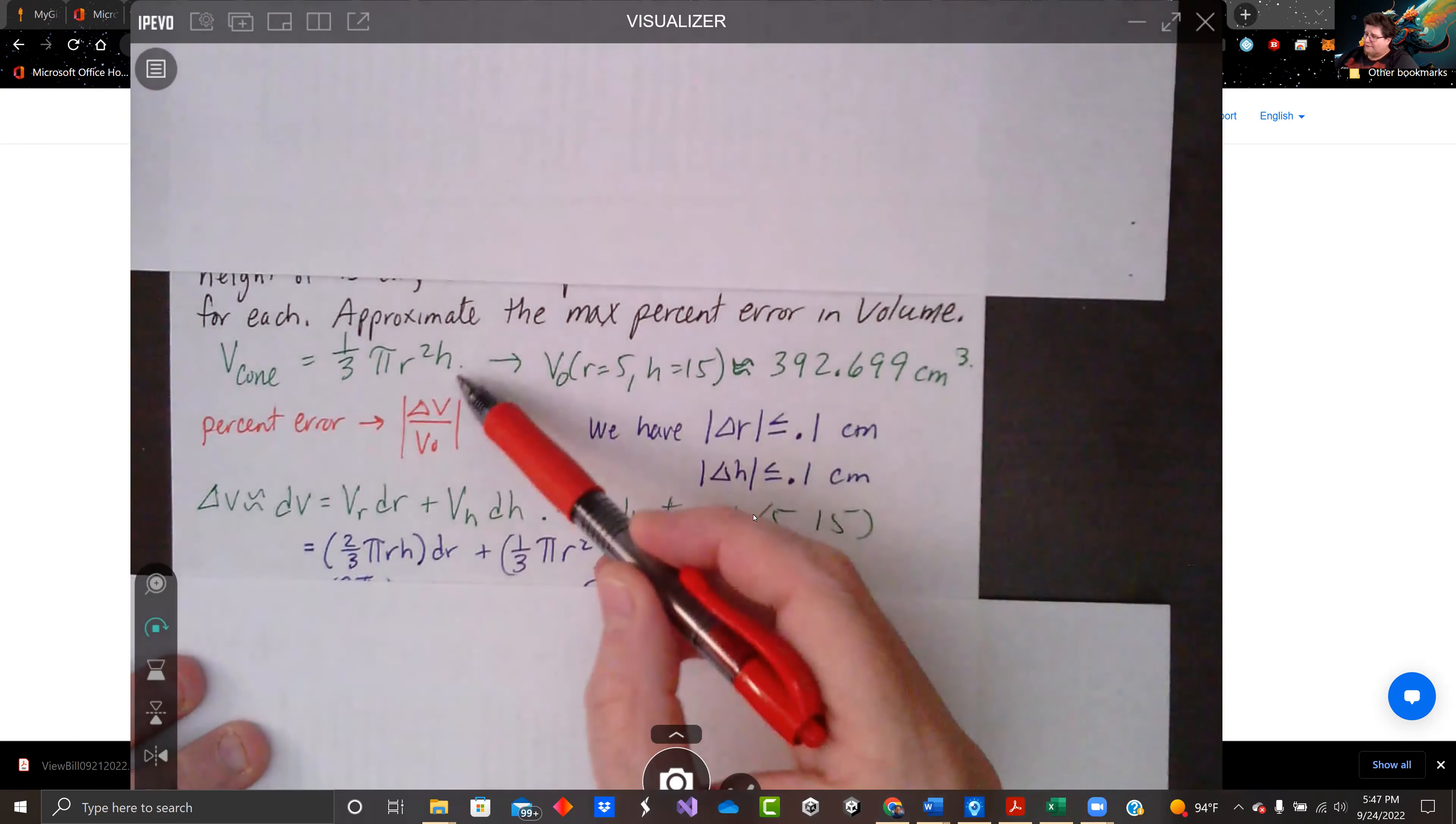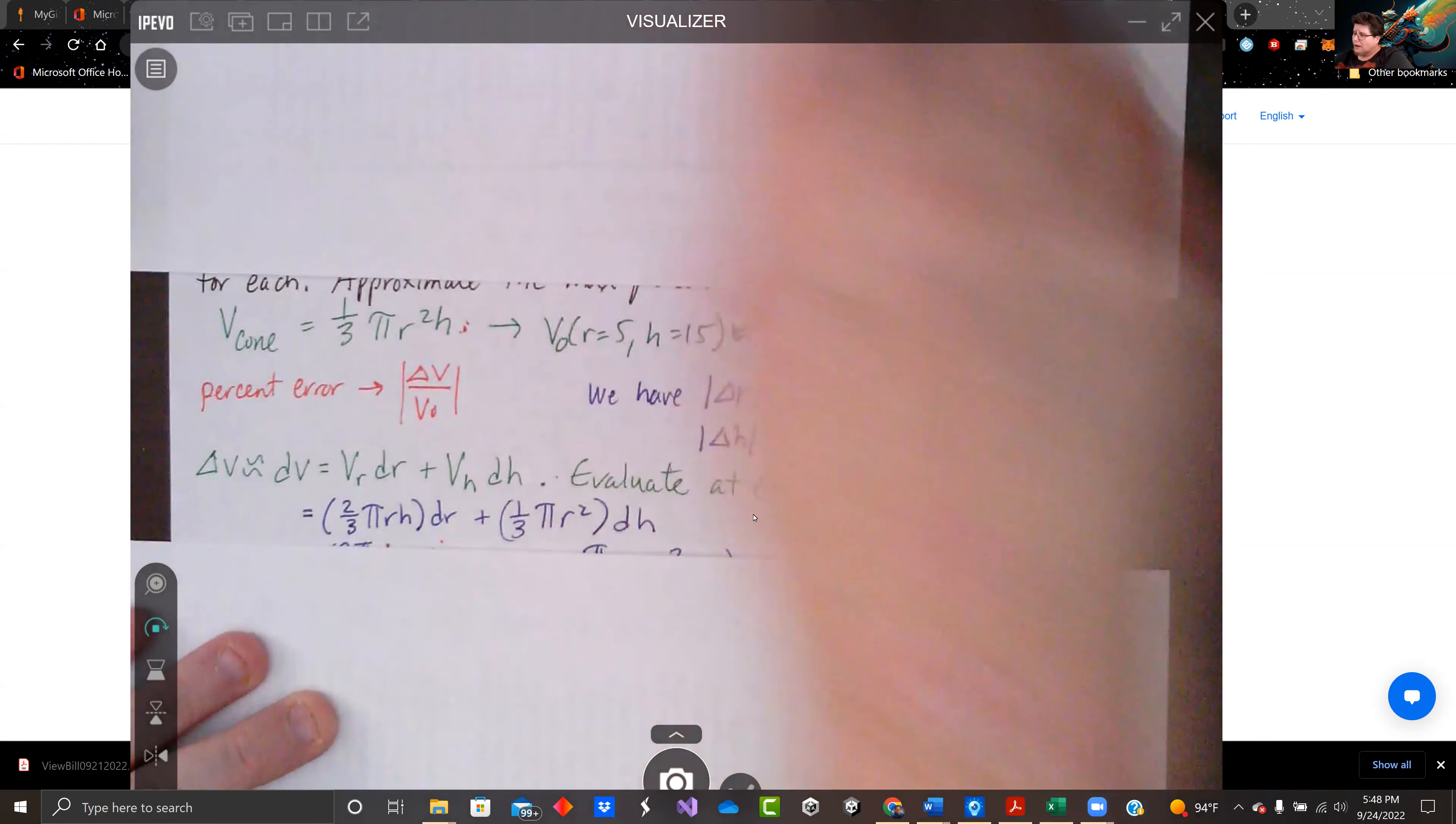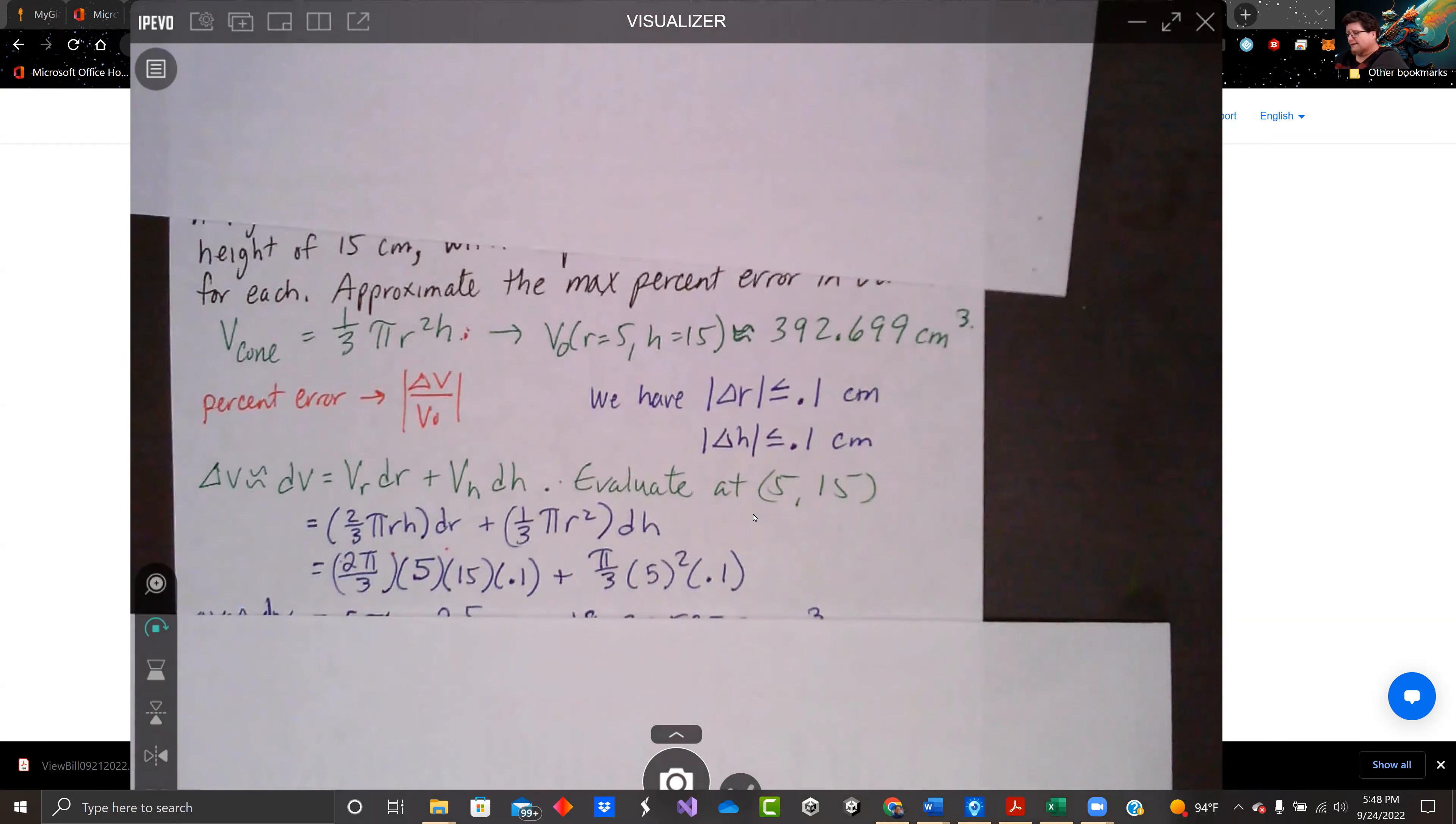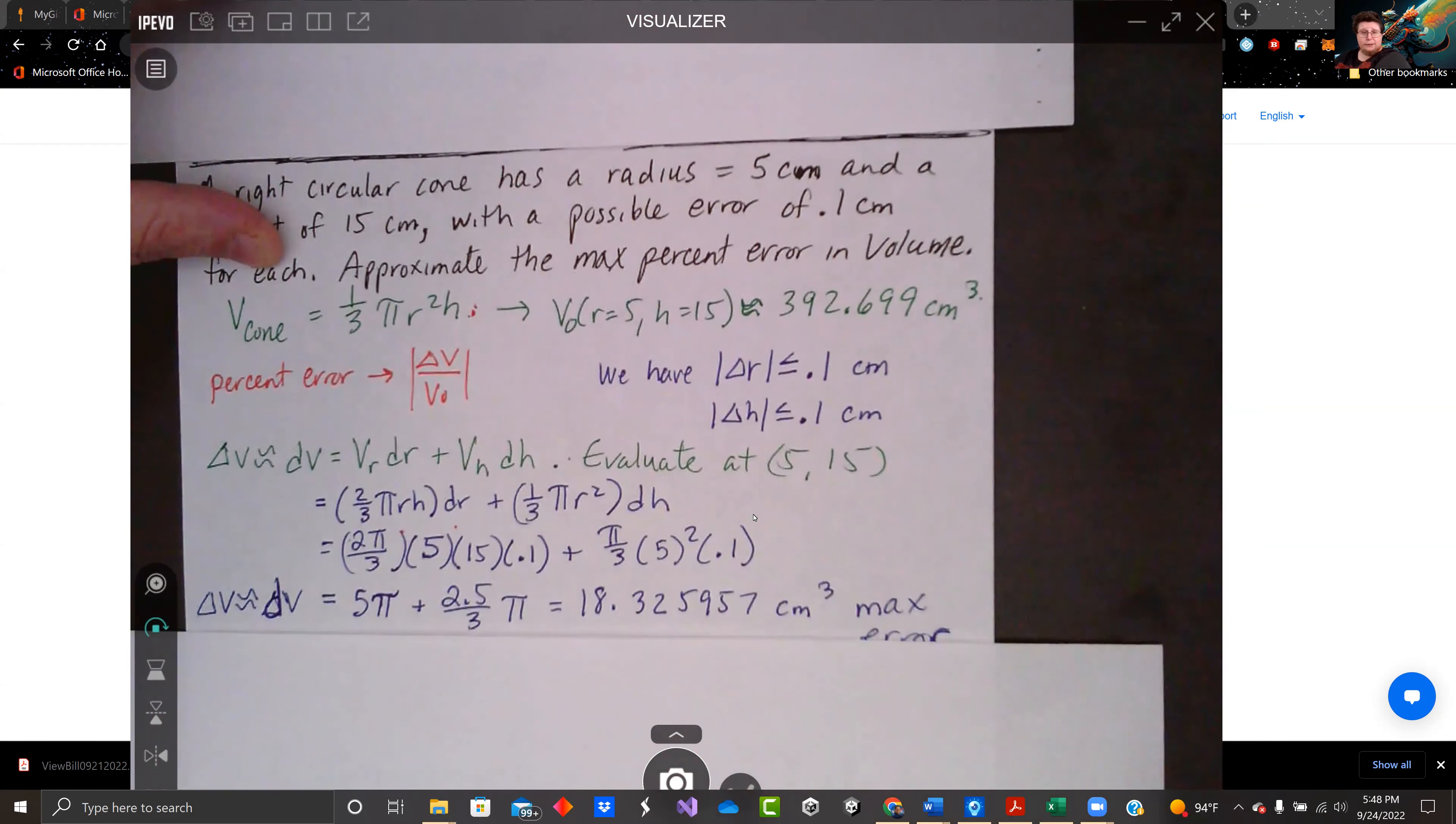So if we take the derivative of the volume function with respect to r, we have two-thirds pi r h times dr. We take the derivative with respect to h, the h just drops off. Now we have values for all these variables. The two-thirds pi r h, plug it in: the r is 5, h is 15. And dr and dh are both 0.1. We find delta V is approximately dV, which is 5 pi plus 2.5 over 3 pi. You work that all out in the calculator, it's like 18.326 cubic centimeters.